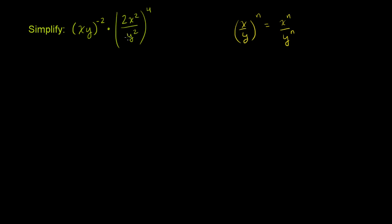So this expression, 2x squared over y squared to the fourth, is going to be the same thing as 2x squared to the fourth power over y squared to the fourth power. And of course, we still have our xy to the negative 2 power out here.